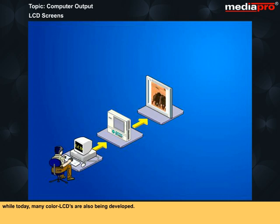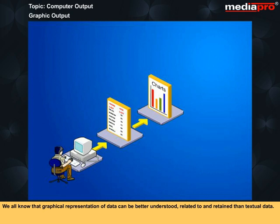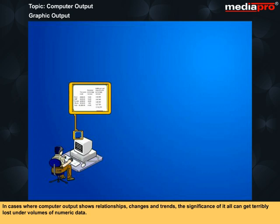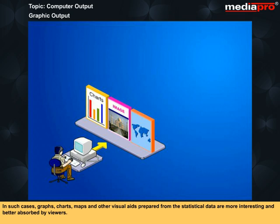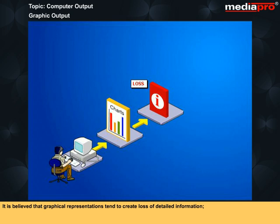We all know that graphical representation of data can be better understood, related to, and retained than textual data. In cases where computer output shows relationships, changes, and trends, the significance of it all can get terribly lost under volumes of numeric data. In such cases, graphs, charts, maps, and other visual aids prepared from the statistical data are far more interesting and better absorbed by viewers. It is believed that graphical representations tend to create loss of detailed information. However, the advantages of the visual impact far outweigh this negligible loss.